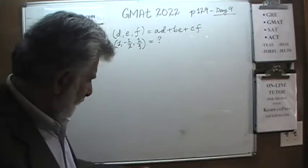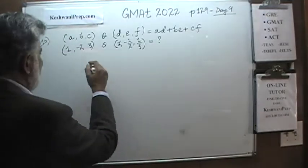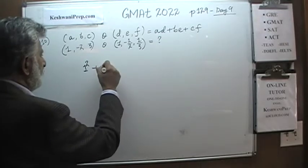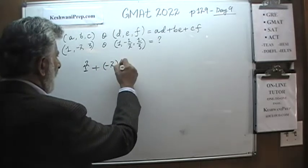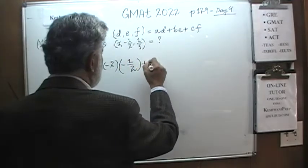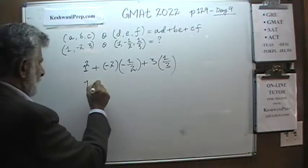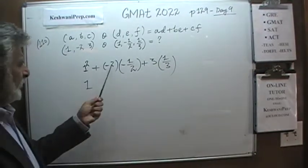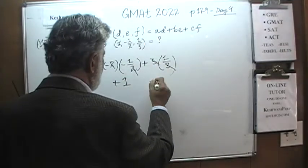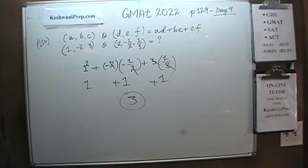Sometimes there are problems in the exam like this which are a gift. So 1 times 1 is just 1, which is 1 squared. Negative 2 times negative one-half — this negative and this negative becomes positive and 2 cancels, which is just positive 1. 3 times one-third is also 1. The answer is 3. Simple, straightforward.